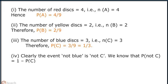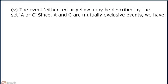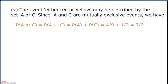Clearly the event 'not blue' is not C, and we know that probability of not C is equal to 1 minus probability of C. Therefore, probability of not C is equal to 1 minus 1 by 3, that is 2 by 3. 5. The event 'either red or yellow' may be described by the set A or C. Since A and C are mutually exclusive events, probability of A or C equals probability of A plus probability of C, that is 4 by 9 plus 1 by 3, which comes out to be 7 by 9.